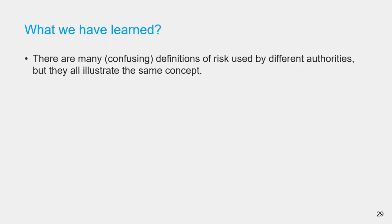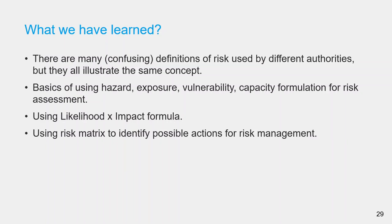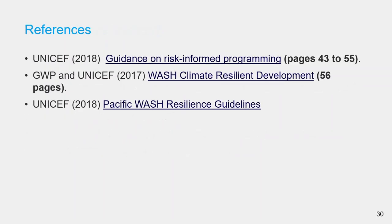Let us summarize what we have learned. We learned that there are many and oftentimes confusing definitions of risk, but once we disentangle them, they all illustrate the same concept. We learned the basics of using the hazard, exposure, vulnerability, and capacity formulation for risk assessment. We also learned to use the likelihood and impact formula — version 2 of the risk equation — to do the risk assessment. We learned how to use a risk matrix to identify possible actions for risk management, and how to identify the causes and impacts of risk events. Finally, here are some references for further information.